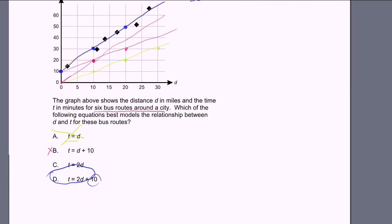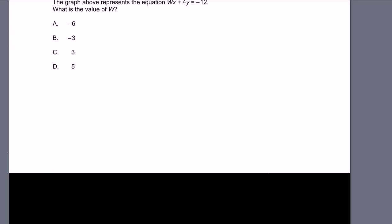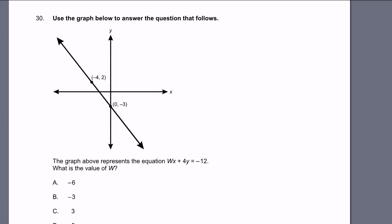Next question. Use the graph below to answer the question that follows. They've drawn us a line with some points. The graph above represents the equation wx plus 4y equals minus 12. What is the value of w? They gave us two points, so we could figure out the equation of this line, but maybe we don't have to go that far. If we just write this line in y equals mx plus b form and figure out the slope of the line, that'll be enough.